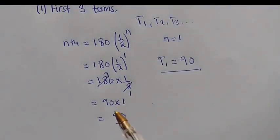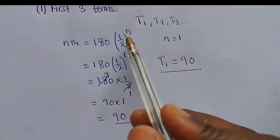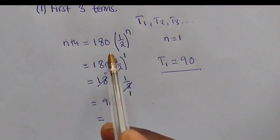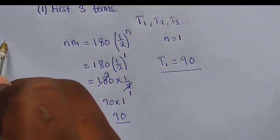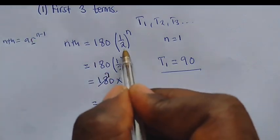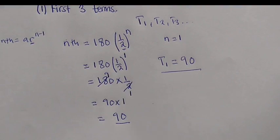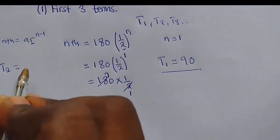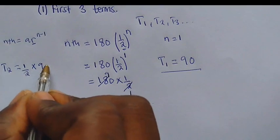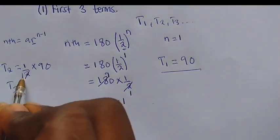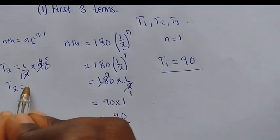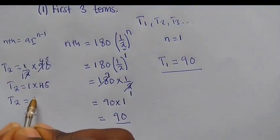So we need to find term 2 and term 3. To find term 2, where there is n, you substitute with 2 — the position of the term. For term 3, you substitute with 3. Now, looking at this nth term, we know the formula where nth term equals a·r^(n−1). So the common ratio is 1/2. To find term 2, we say the common ratio, which is 1/2, times the first term, which is 90. So 2 into 90 is 45. My term 2 is going to be 45.